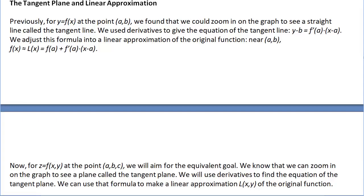Now we bring this up to date for multivariable functions: z equals f of x y. We'll be at the point a comma b comma c and aim for the equivalent goal. We already know that we can zoom in on the graph to see a plane — and that plane is called the tangent plane. We're going to use derivatives to find its equation, and also make a linear approximation function L of x y.